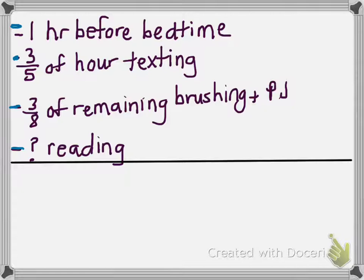So the first thing I want to find out is how much time did she actually spend texting. So it says three-fifths of the hour. So I'm going to write three-fifths. And how long is an hour? Sixty minutes. Now I can rewrite this.